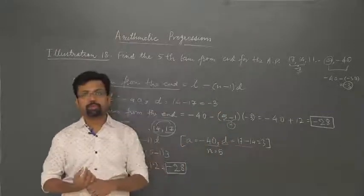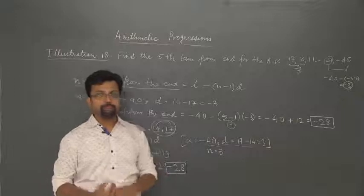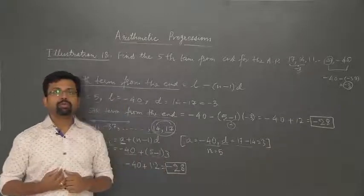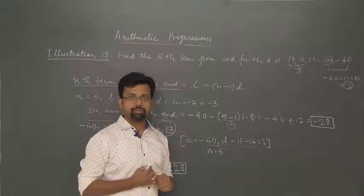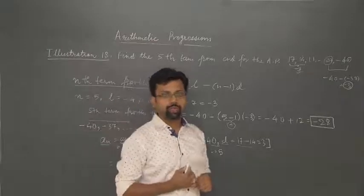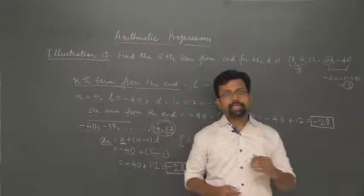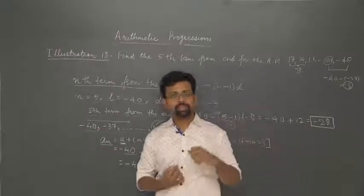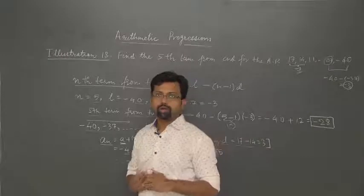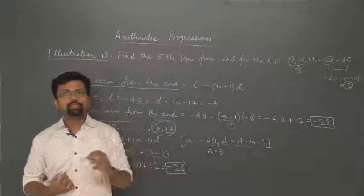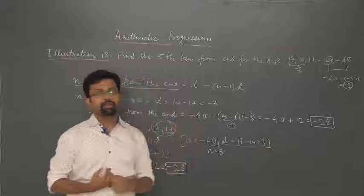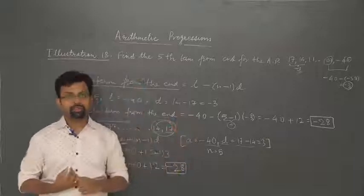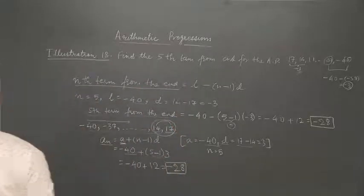If you have trouble remembering many formulas, you can reverse the order of the given AP and still use the formula A_N equals A plus (N minus 1) into D, where A is the first term, N is the nth term to find, and D is the common difference. We will now take up a few more illustrations on miscellaneous problems in arithmetic progression, and after that we will get into finding the sum to N terms of an AP. Thank you.